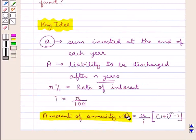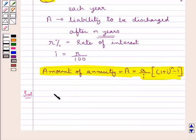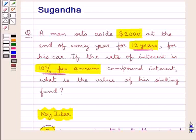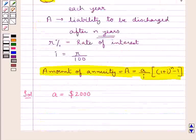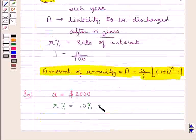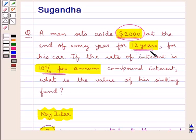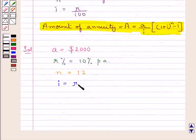For this we use the formula. Small 'a' is the sum invested at the end of each year, so for this question small a is equal to $2,000. R percent, the rate of interest per annum, is 10% per annum. N is equal to 12, the time for which the sum is invested. So i is equal to R upon 100, that is 10 upon 100, which equals 0.1.